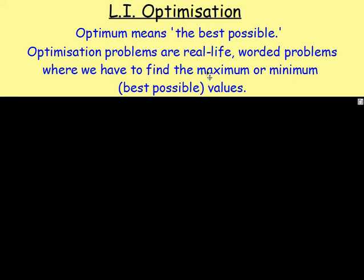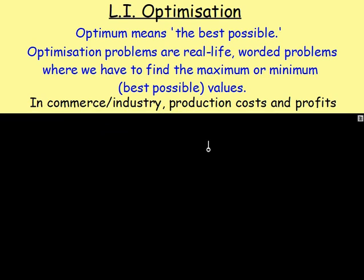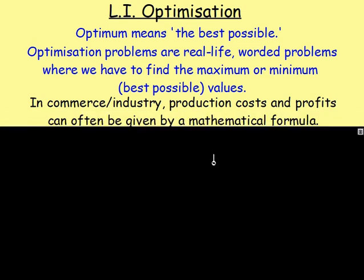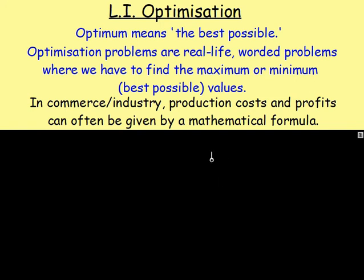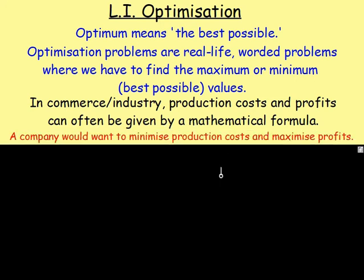Where does this come in real life? In commerce or industry, production costs and profits can often be given by a mathematical formula, and a company would want to minimize production costs and maximize profits. For example, a company like Kellogg's knows the volume of cereal they put in a box, and for that volume they want to find the minimum surface area — to minimize the amount of cardboard they use. To work out the minimum, they can use optimization.